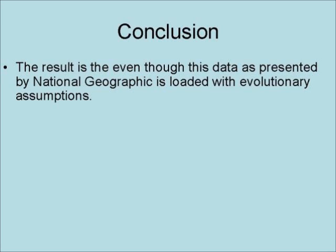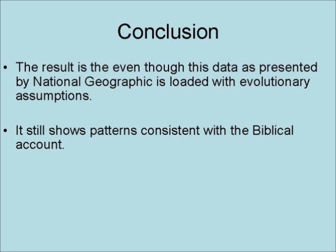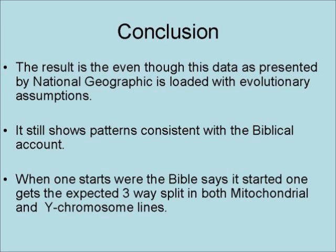In conclusion, even though the data presented by National Geographic is loaded with evolutionary assumptions, it still shows patterns consistent with the biblical account. Where one starts where the Bible says it started, one gets the expected three-way split in both mitochondrial and Y-chromosome lines.